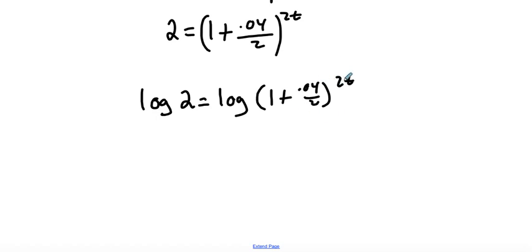That's helpful because now we can bring down our 2T. So we have log of 2 is equal to, now I'm going to bring this guy down in front. This is our power rule. 2T times the log of one plus 0.04 all over 2.